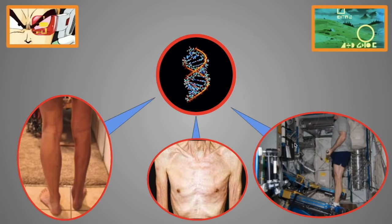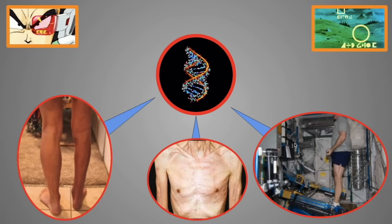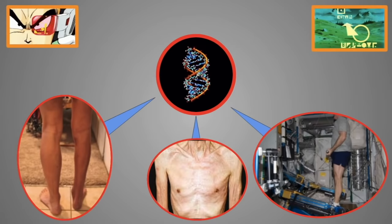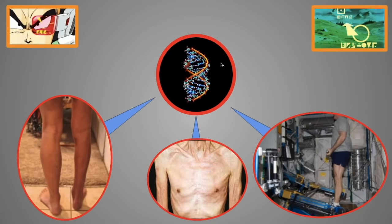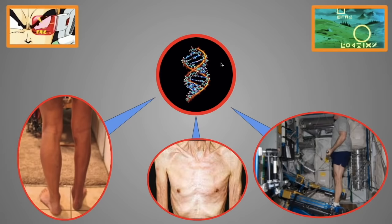And the reason why astronauts lose a ton of muscle mass in space is because, once again, when you go into space in a low-gravity environment, myostatin also goes up. So myostatin is the bad guy if your goal is to maximize muscle growth.